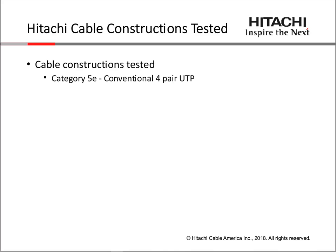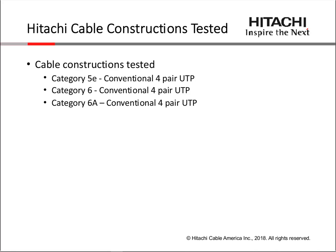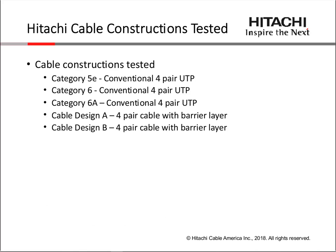The constructions tested were: a Category 5e, a conventional four-pair UTP; a Category 6, again conventional four-pair UTP; and a Category 6A cable rated to 10 gigabit but tested in this gigabit application as well. We also tested two barrier designs — a conventional core surrounded by a barrier layer. We call these cable design A with a barrier layer and cable design B with a different barrier layer. One purpose of this investigation was to determine any differences between these two cable designs.